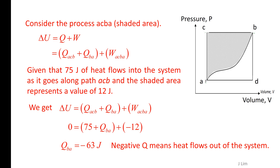Given that 75 joules of heat flows into the system as it goes along path ACB, and the shaded area represents a value of 12 joules, we get Q from B to A equals minus 63 joules. Negative Q means heat flows out of the system.